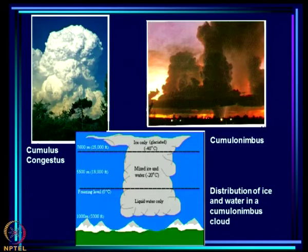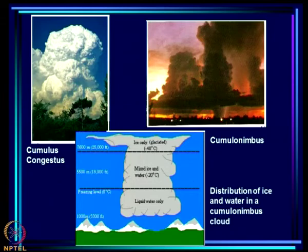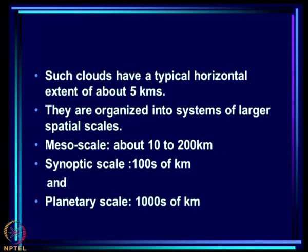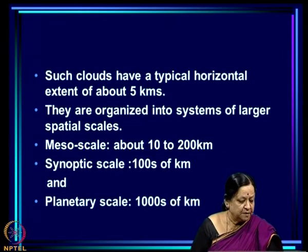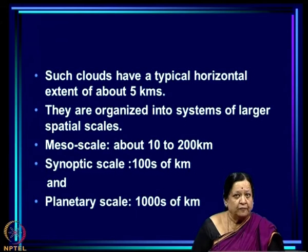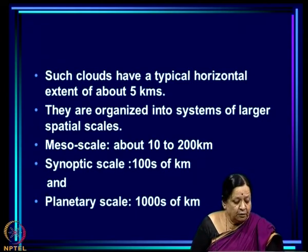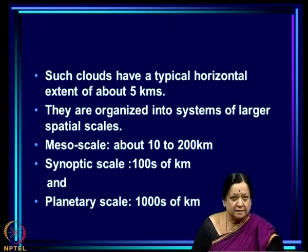These are the individual clouds we talked about — cumulus congestus being a rain-giving cloud, cumulonimbus being a rain cloud, and so on. Such clouds have a typical horizontal extent of about 5 kilometers, and they are organized into systems of larger spatial scales.